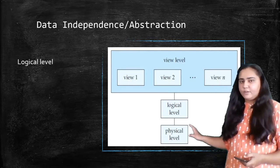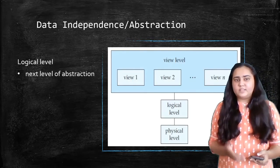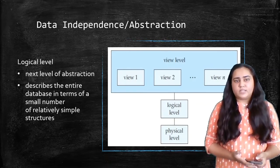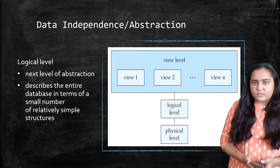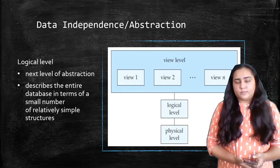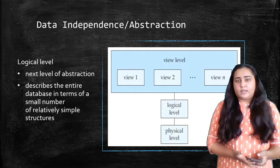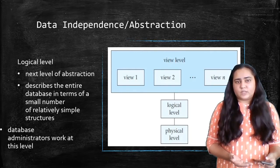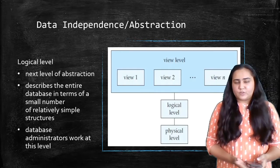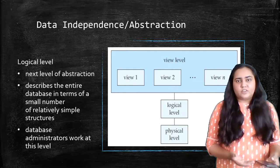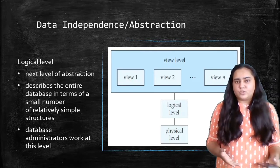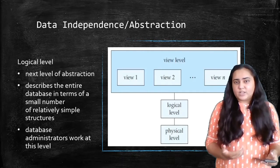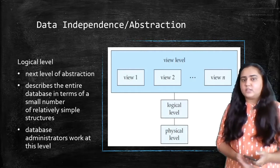The second level is the logical level, the next level of abstraction. This describes the entire database in terms of a small number of relatively simple data structures, like B-trees and indices, which are used to create an index for faster data access. Data administrators work at this level — if you are creating the database and defining columns, their data types, and what data should be stored, you are working as a database administrator at the logical level.